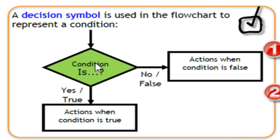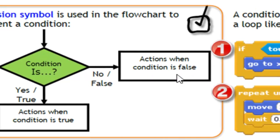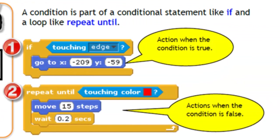A decision symbol is used in the flowchart to represent a condition. And the condition is? If it's true, use the arrow to draw down to the bottom. And the next thing to follow is action when the condition is true. However, if it's false, we need to move to the right side, and followed by the actions to take if the condition is false. Next, a condition is a part of a conditional statement like if, and a loop like repeat until.